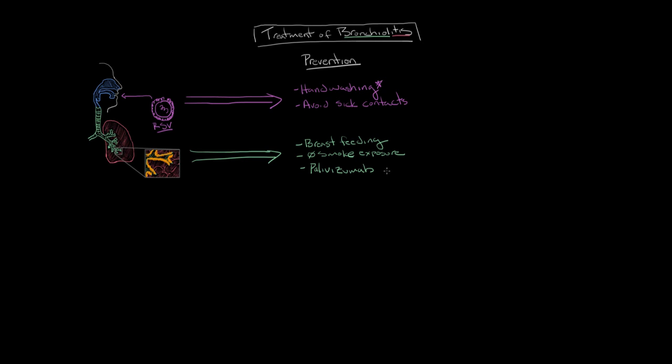But what is palivizumab? It's an injection of pre-formed antibodies. These antibodies circulate in the blood and any time an RSV virus shows up in the blood, these antibodies immediately attack it and they bind up the virus and they allow the immune system to destroy the virus before it can even set up an infection. And once again, this medication is really only reserved for high risk children.